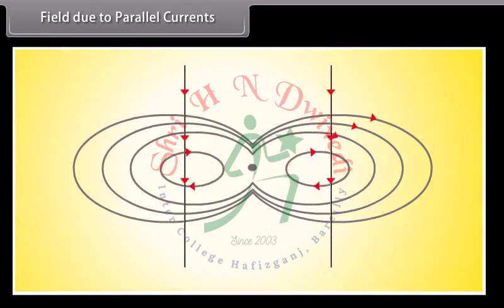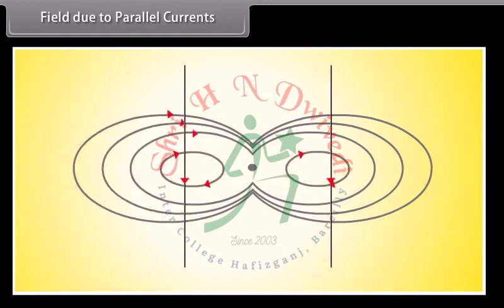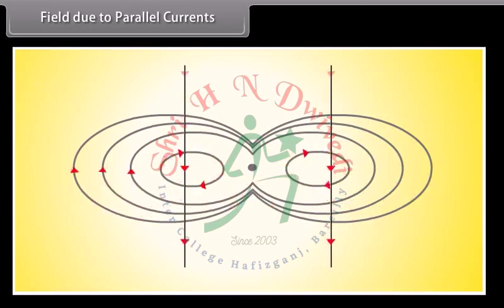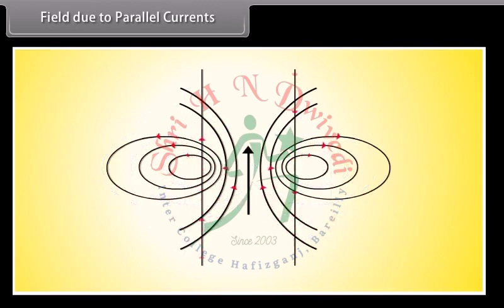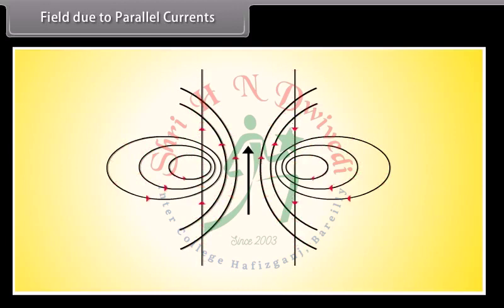Field due to parallel currents: When two parallel conductors carry current in the same direction, the combined magnetic field pattern indicates attraction between the conductors. When two parallel conductors carry currents in opposite directions, the pattern of the magnetic field indicates repulsion between the conductors.